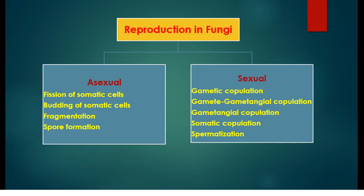Today we will discuss about sexual reproduction methods in fungi. Fungi reproduce sexually by five different methods, which include gametic copulation, gametangial copulation, gametangial contact, somatic copulation and spermatization.